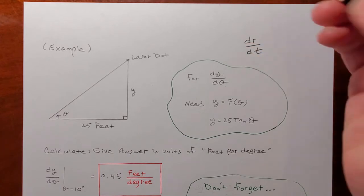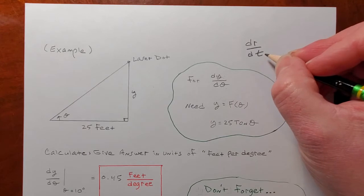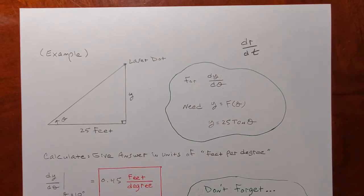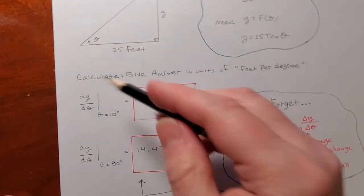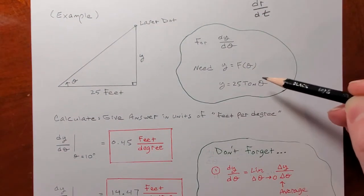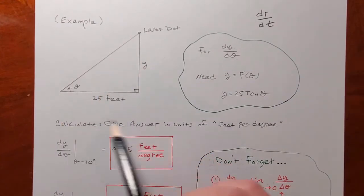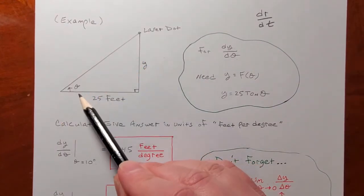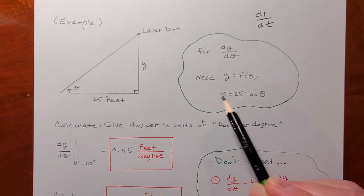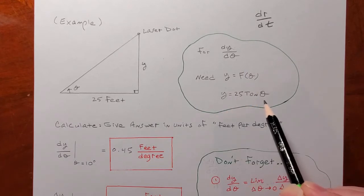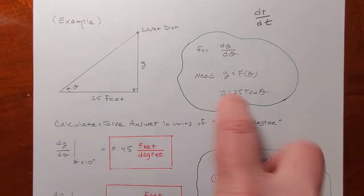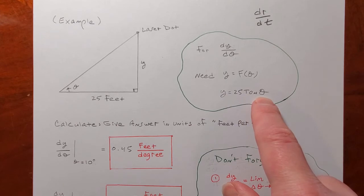If I wanted, say, dR over dT for some other problem, in order to find that I need R to be a function of T — some kind of formula where I can plug in T, do all the math, and it will calculate R. So if the question says what's dy over dθ, then I need y to be a function of theta. But we already found that: tangent theta equals y over 25, which reduces to y equals 25 tangent theta. That is putting y as a function of theta — you plug in theta, you get y.